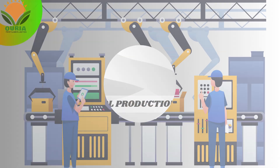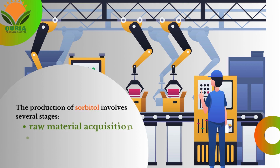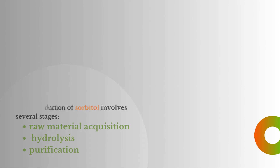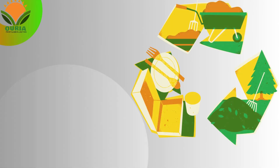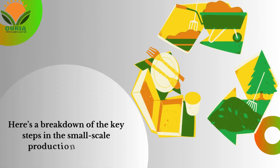Sorbitol production process: The production of sorbitol involves several stages — raw material acquisition, hydrolysis, and purification. Here is a breakdown of the key steps in the small-scale production process.